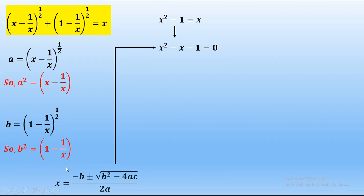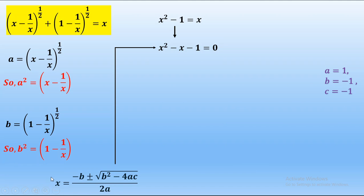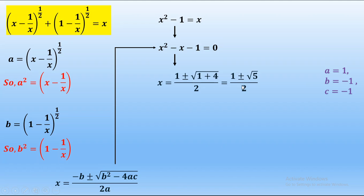Using the quadratic formula x = (−b ± √(b² − 4ac)) / 2a to find the roots, the values of a, b, and c are the coefficients of x², x, and the constant term respectively. Therefore a = 1, b = −1, and c = −1. Substituting into the formula we obtain x = (1 ± √(1 + 4)) / 2, that is x = (1 ± √5) / 2.